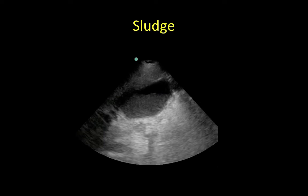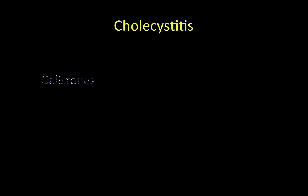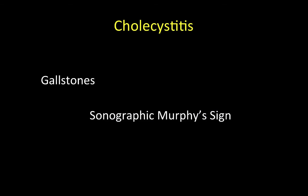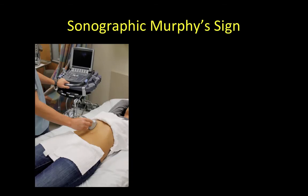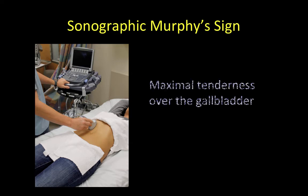Cholecystitis is an inflammation of the gallbladder wall most frequently caused by cystic duct obstruction by a gallstone. The key findings are presence of gallstones, sonographic Murphy sign, gallbladder wall thickening, and pericolecystic fluid. These findings may present alone or in various combinations, and when considered along with abnormal laboratory findings, a diagnosis of cholecystitis can be made. A sonographic Murphy sign is elicited by placing pressure with the ultrasound transducer directly over the anterior most portion of the gallbladder; maximal tenderness directly over the gallbladder compared to other regions of the right upper quadrant is highly predictive of cholecystitis.